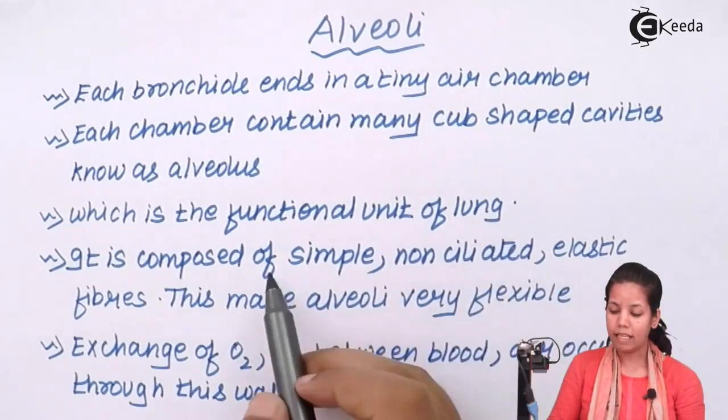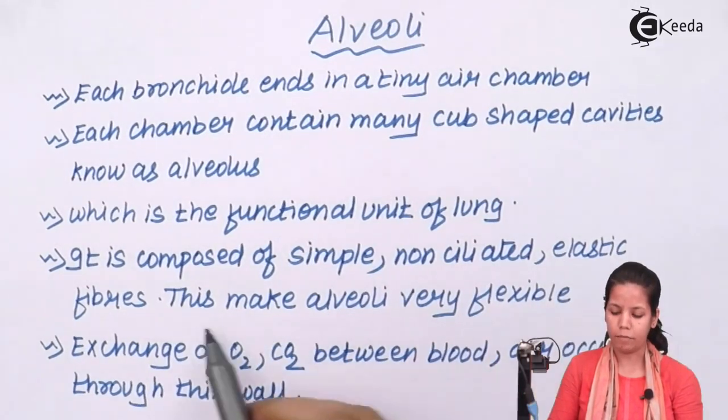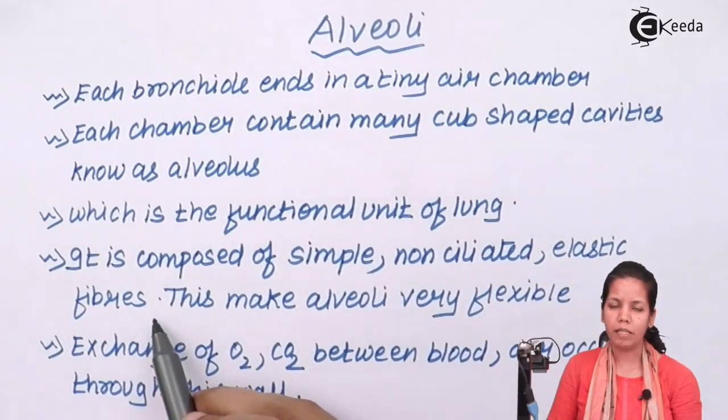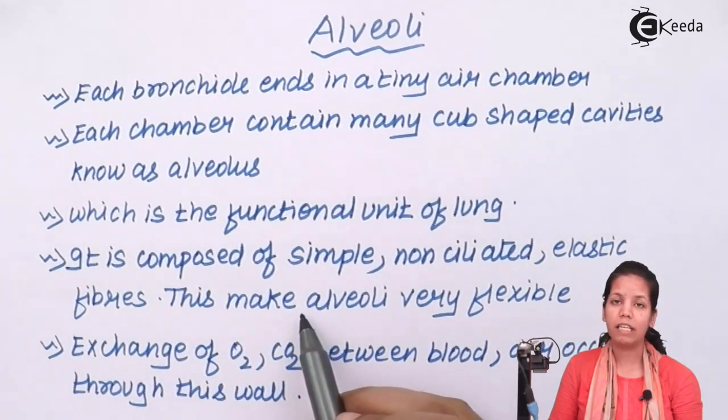And this alveoli basically consists of simple non-ciliated elastic fibers which increases the permeability of the alveoli region. This makes alveoli very flexible in nature also.